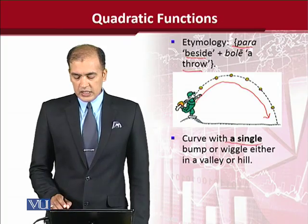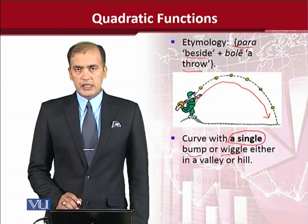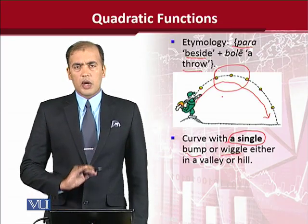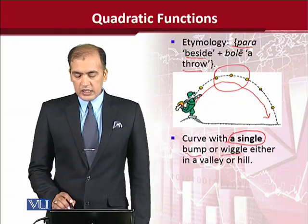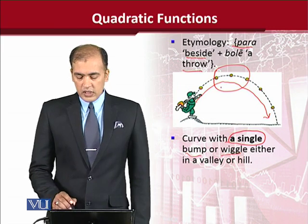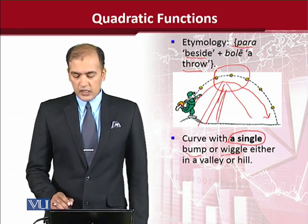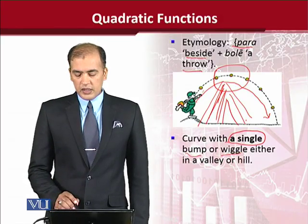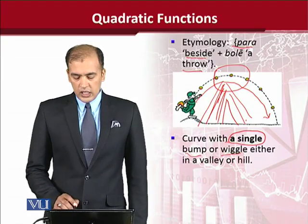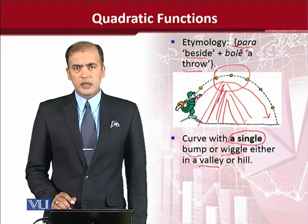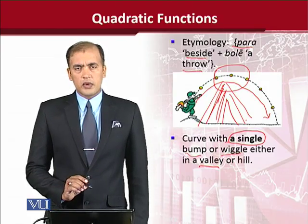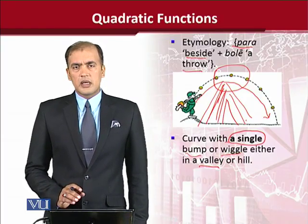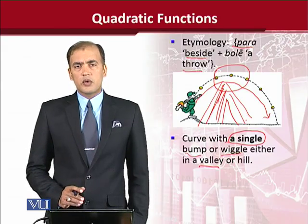This shape has the feature that it has only one wiggle or bump in it — this is the more apparent part of the diagram. It can either be in the form of a hill or a valley. It looks like a hill or a mountain, but if it is in the reverse way — that is, in the shape of a U — then it will look like a valley, where there is a U-shape and the hills are on the sides. So a parabola can be either in the shape of a hill or in the shape of a valley.